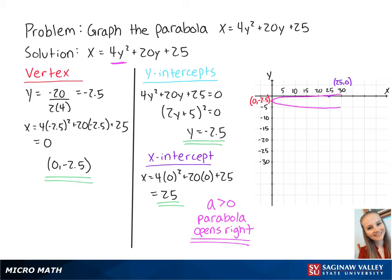The axis of symmetry is a line that goes through the vertex at y equals negative 2.5. Now we have graphed and labeled our parabola.